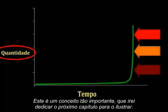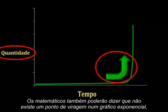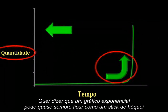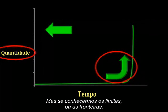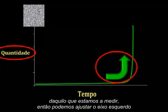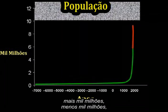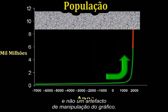This is such an important concept that I will dedicate the next chapter to illustrating it. Mathematicians would say that there's no turn-the-corner stage of an exponential chart, because this is just an artifact of where we draw the left-hand scale — an exponential chart can nearly always look like a hockey stick at every moment in time, as long as we adjust the left axis properly. But if we know the limits or boundaries of what we are measuring, then we can fix the left axis and the turn-the-corner stage is absolutely real and vitally important. For example, the total carrying capacity of the Earth for humans is thought to be somewhere in this zone, give or take a few billion, and so the turn-the-corner stage is very real and not an artifact of graphical trickery.